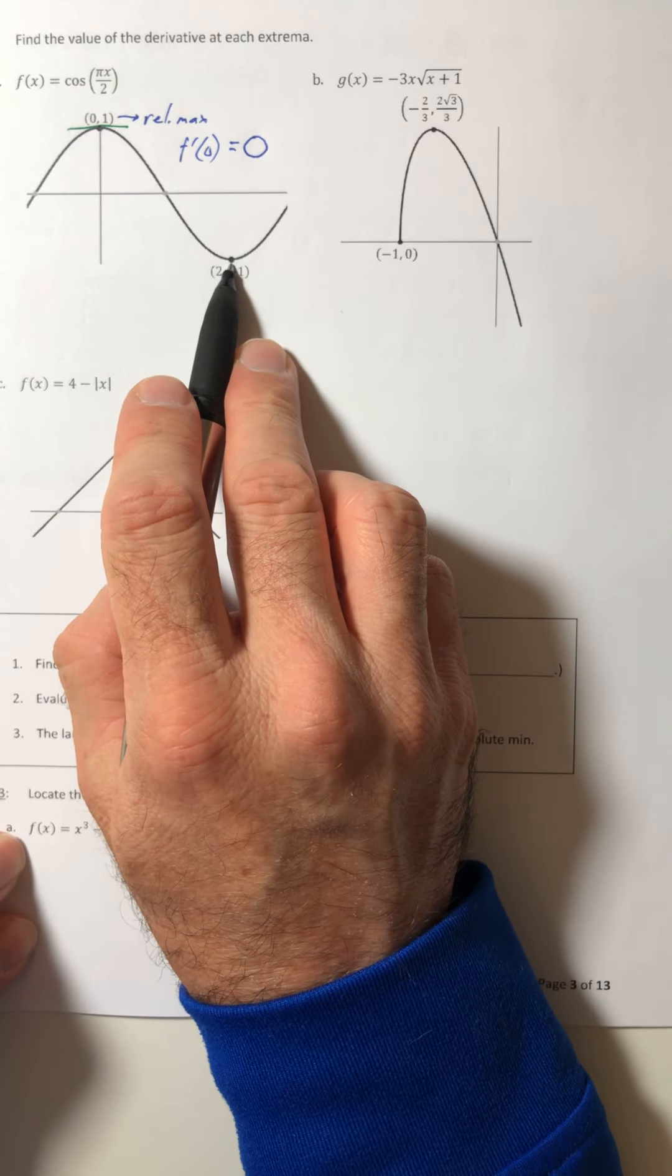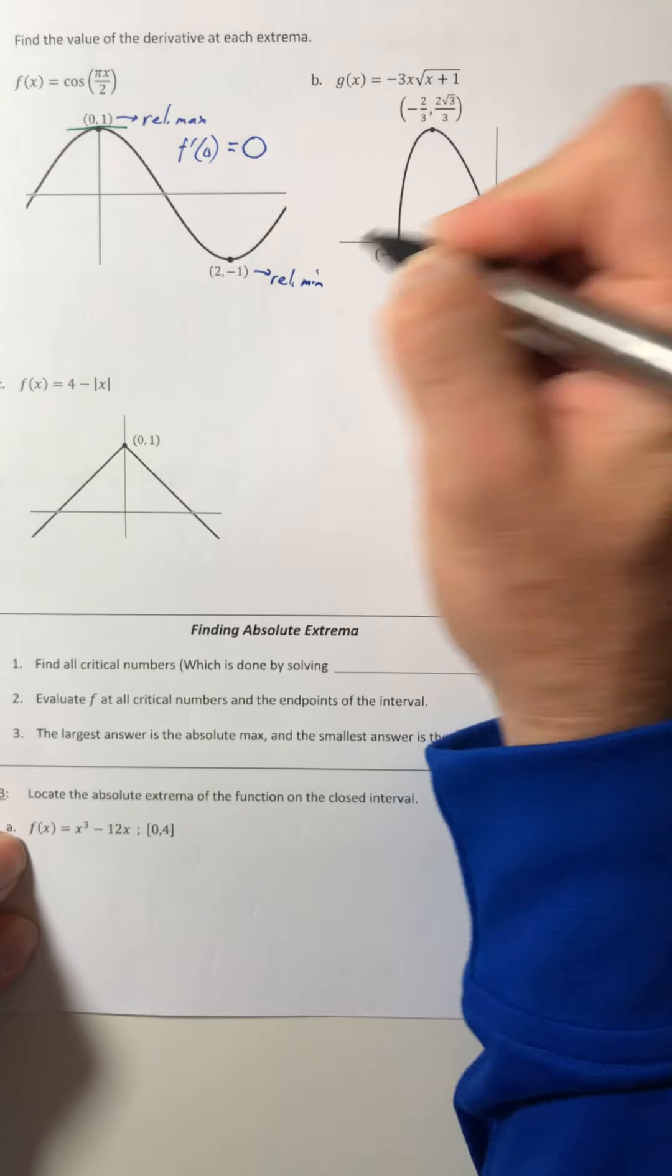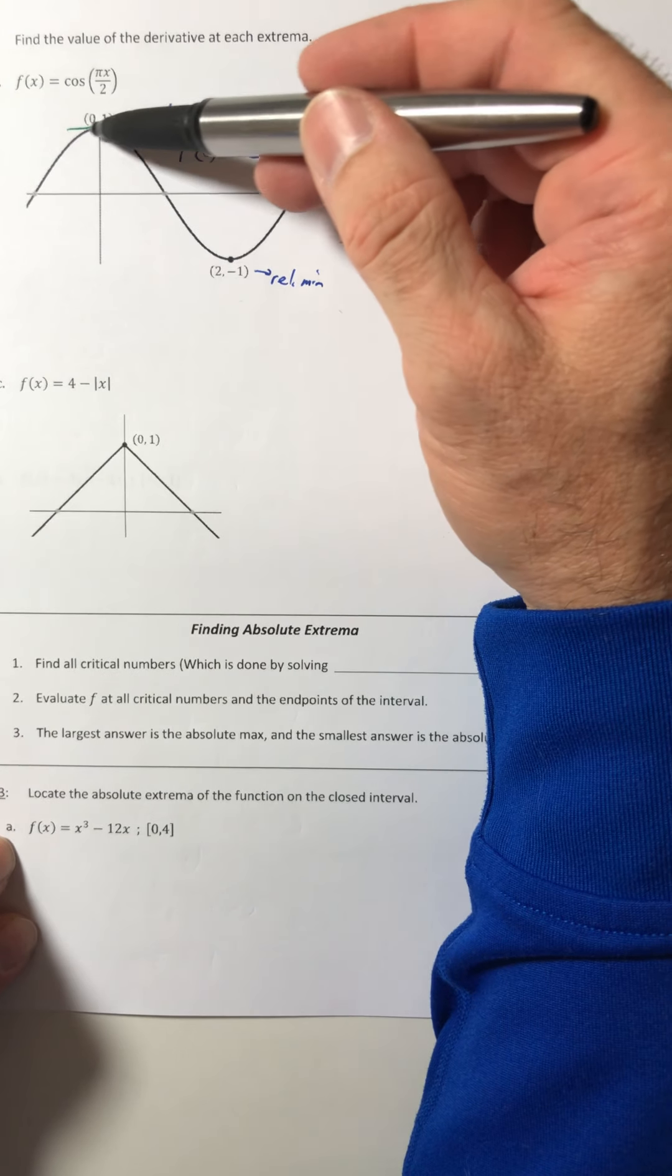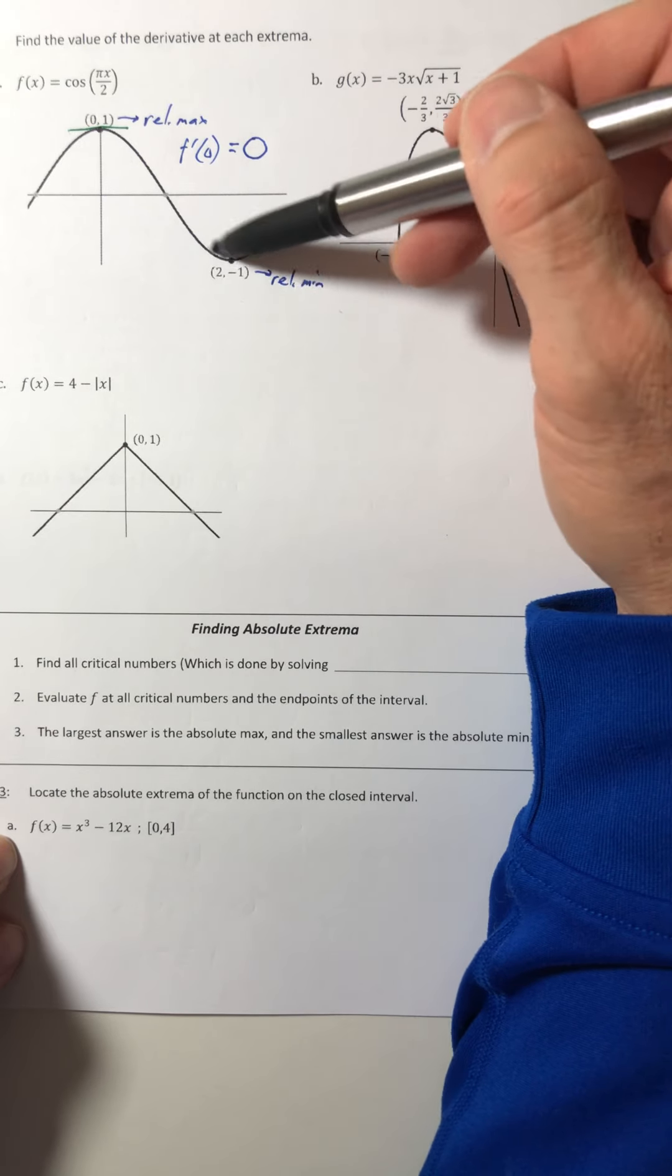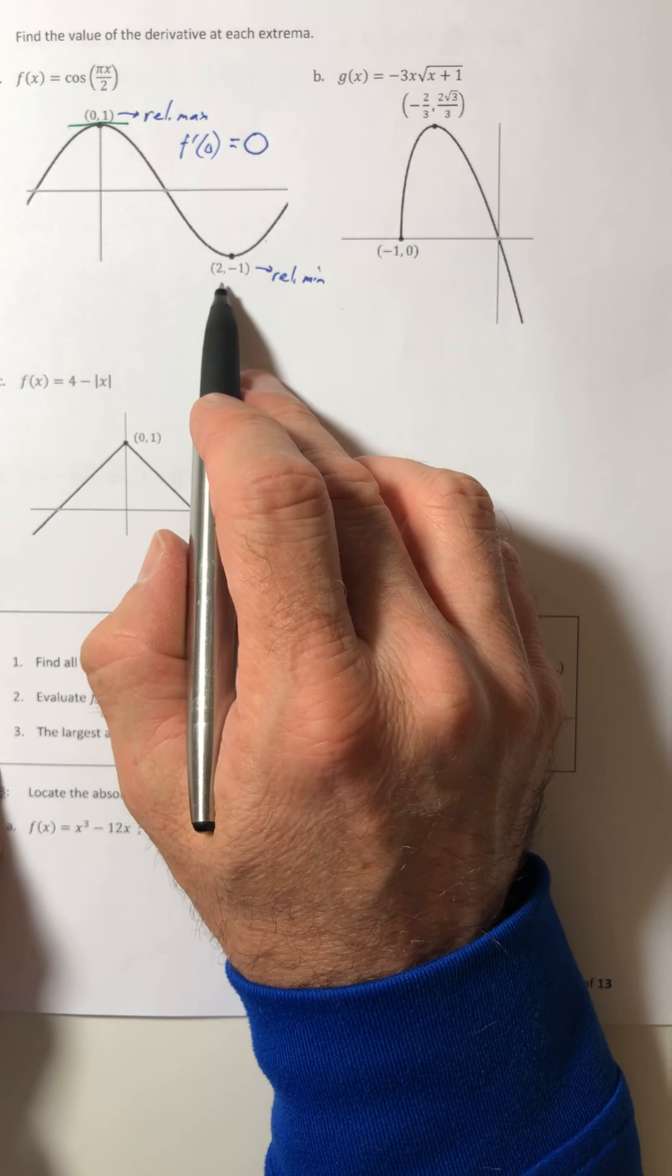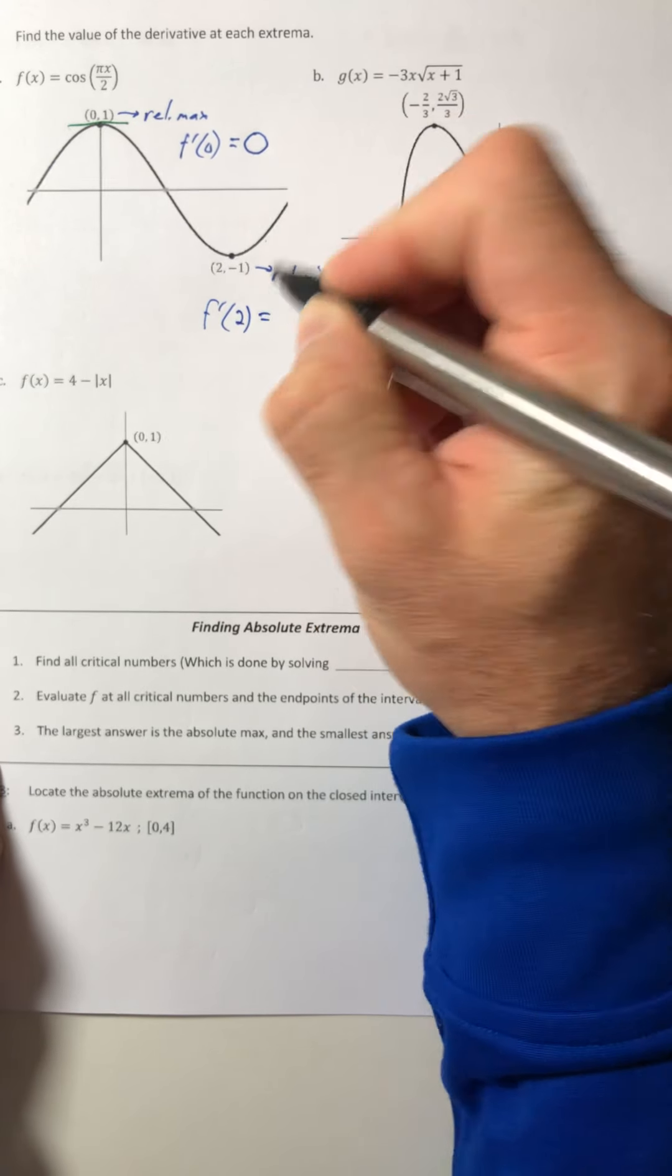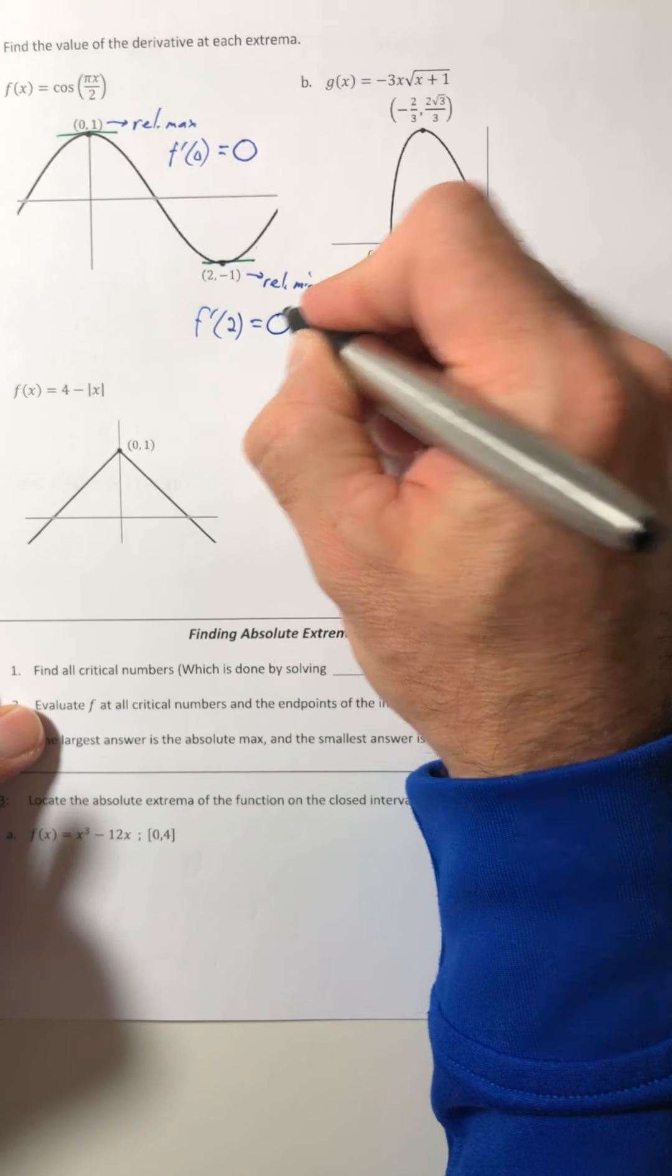So for this guy down here, that's a relative min. So relative max is like at the top of a hill. And the relative min is a curve at the bottom of a valley. I don't think we've stated that yet, but there you go. So it's a relative min. So you've got another critical number at that same x value. And you've got another horizontal tangent line, which means the derivative is zero.